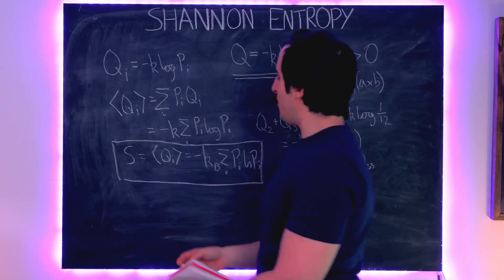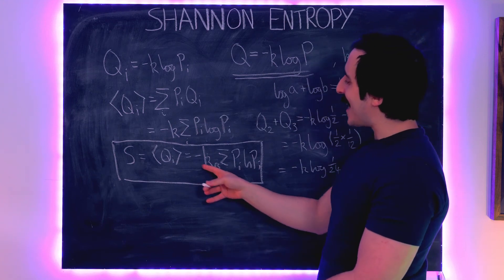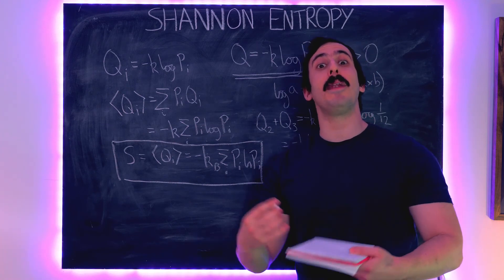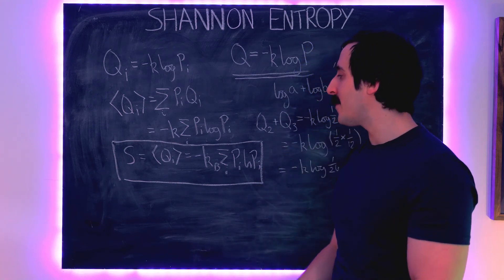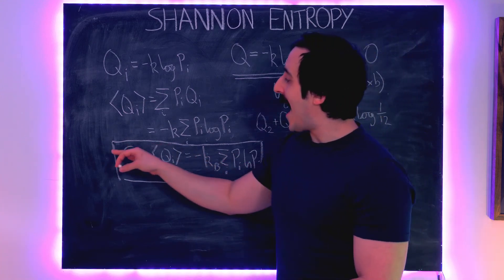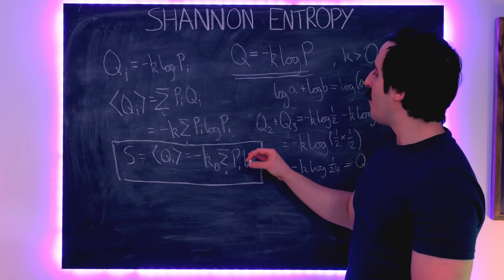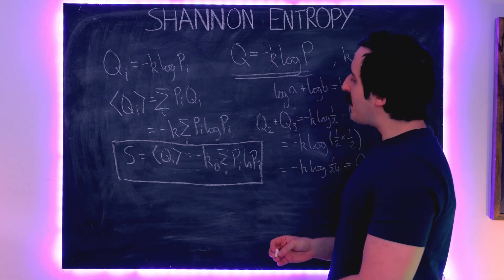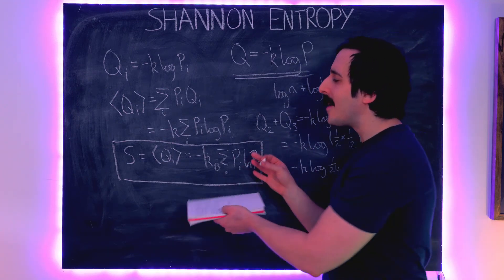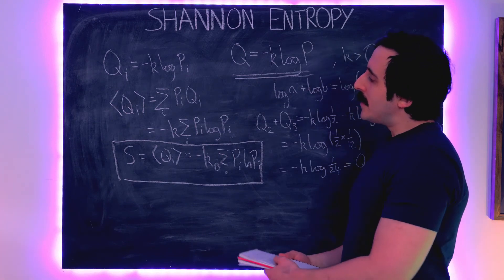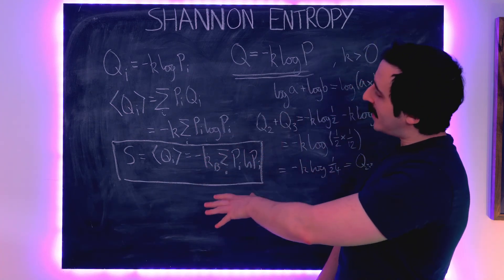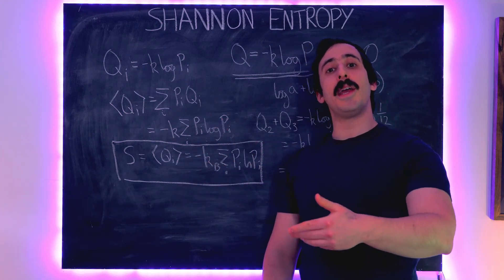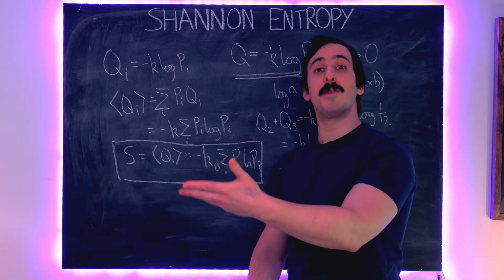The eagle-eyed among you will notice that this is exactly the same as the expression for the Gibbs entropy — the probabilistic entropy — which we saw in the last video. This is the expression for entropy as devised by Shannon in terms of the probability of statements as they relate to the information we get from those statements.